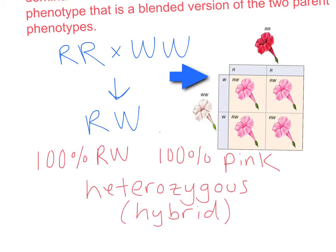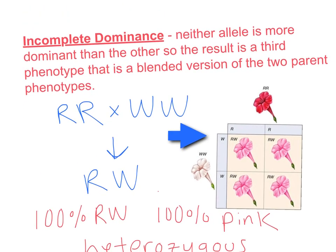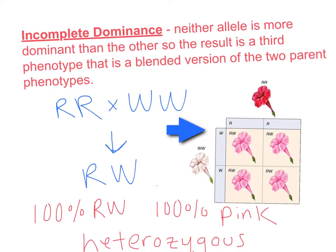So just to review: with complete dominance, you get either the dominant or recessive trait showing up. In incomplete dominance, you don't get either of the parent phenotypes — you end up with a third phenotype, which is a blended version of the original two.